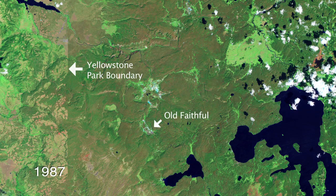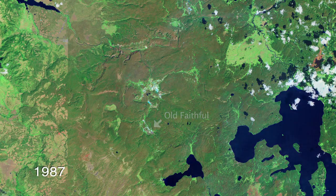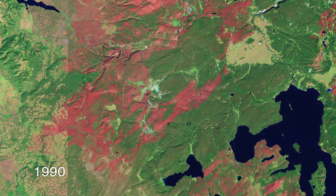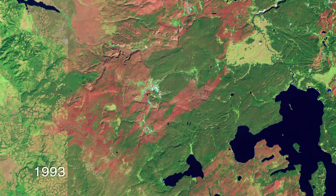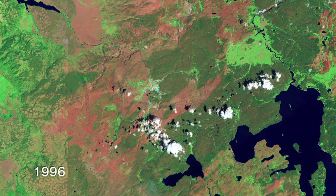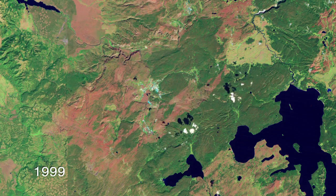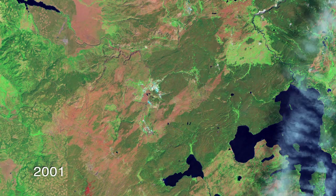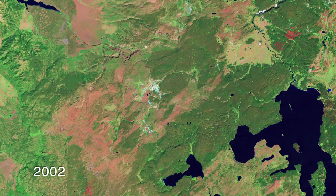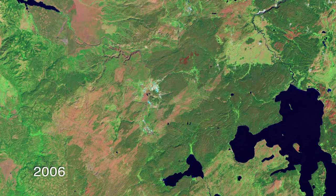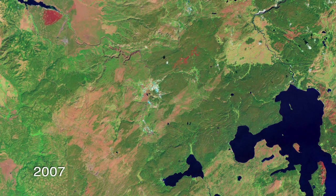In these images, the vegetation — the healthy vegetation — is dark green. That's the sign of tall, healthy forest. And what you can see right after the fire is the very obvious fire scar; it's the dark reddish-brown color.